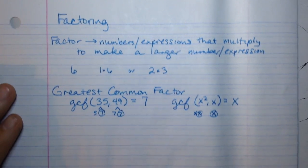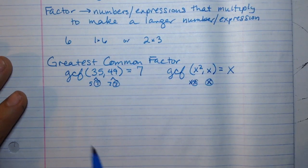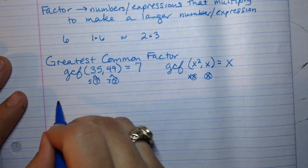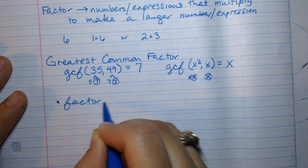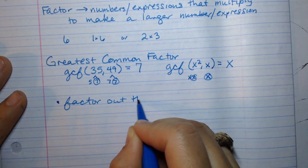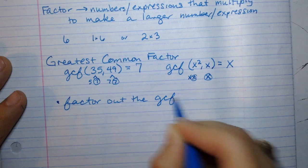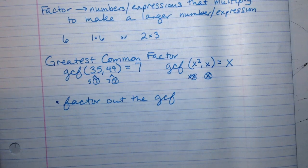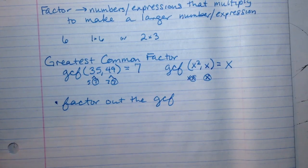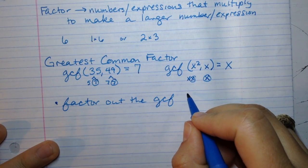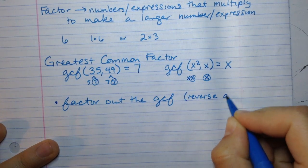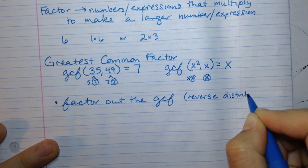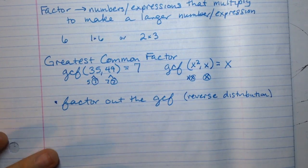Now when you get into high school, we'll be asked to do this with not just numbers, but with expressions. The first thing you'll be asked to do dealing with the GCF is to factor out the GCF. This is always what you want to look for first. Most factoring problems will have a GCF, and you take it out. When you're doing this, this is reverse distribution.